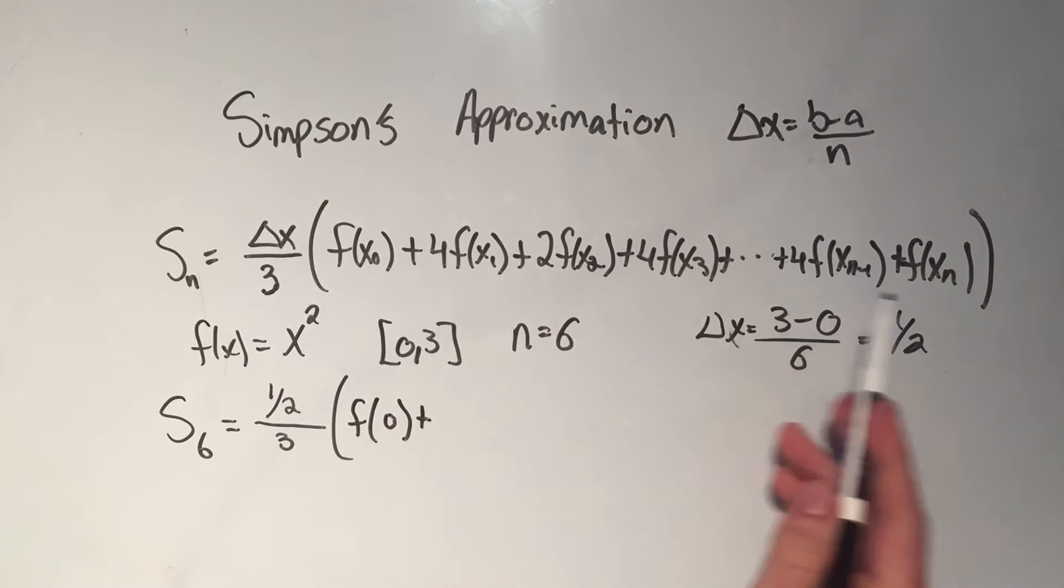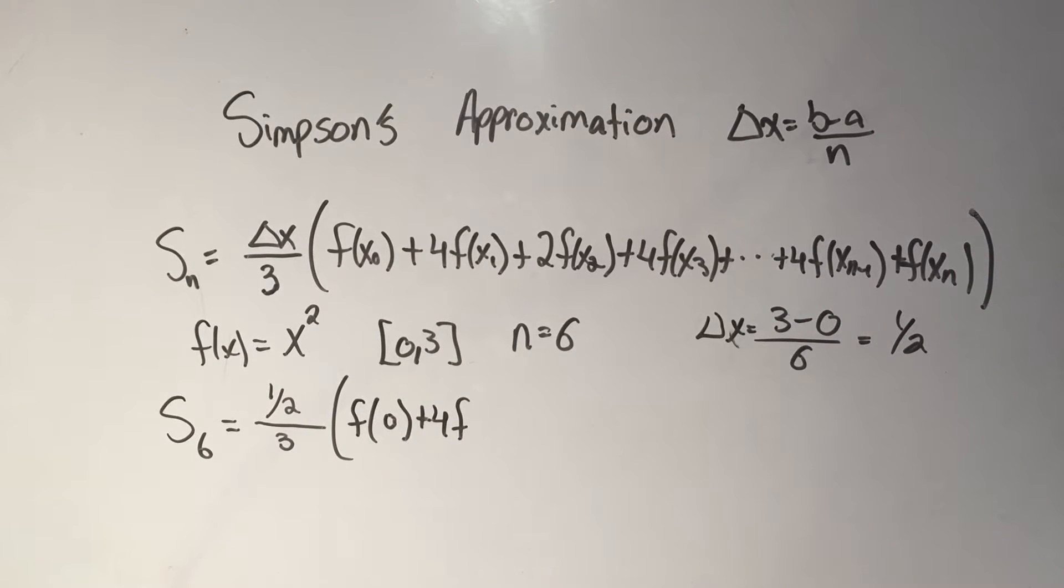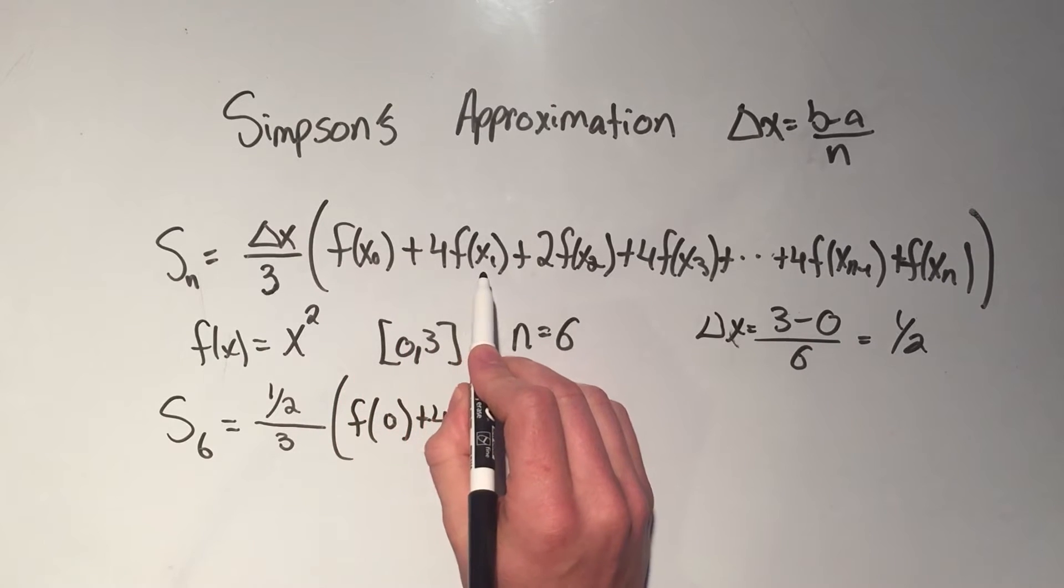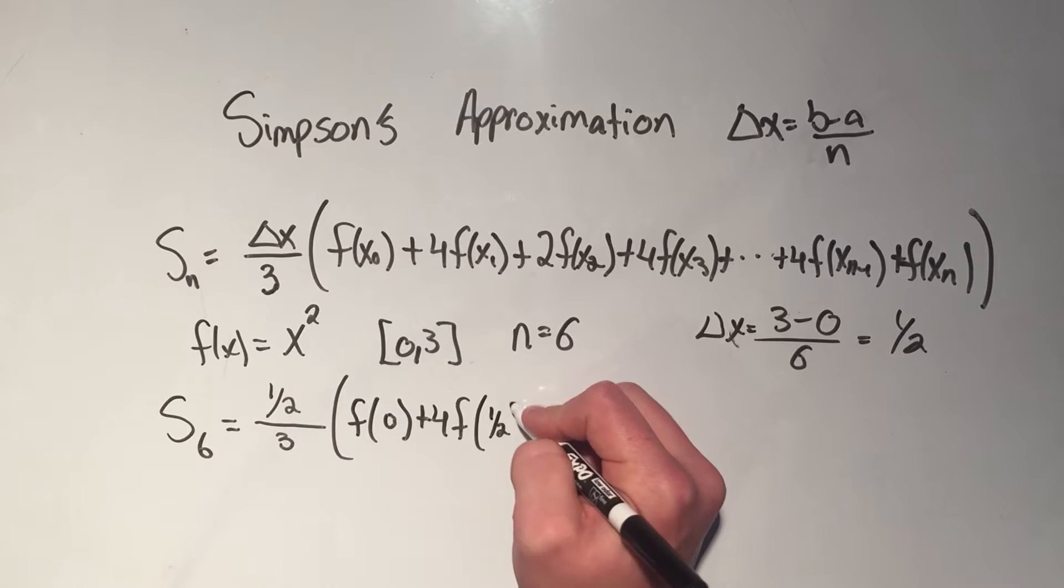And then following this sum, I do plus 4, f of x1. How do I get from x0 to x1? I add on delta x. So to get from 0 to the next one, I need to add 1 half. 0 plus 1 half is 1 half.